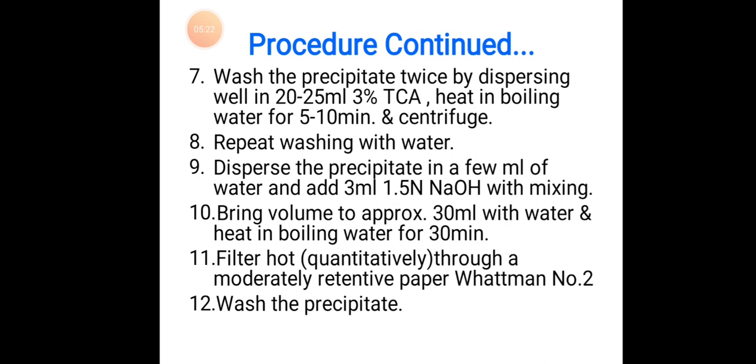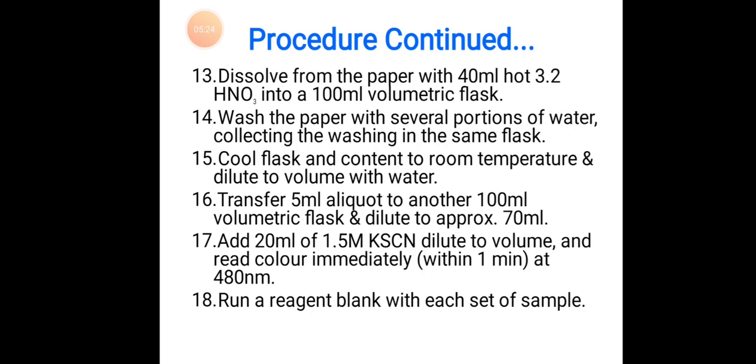Dissolve the paper with 40 ml hot 3.2 normal HNO3 into a 100 ml volumetric flask. Wash the paper with several portions of water, collecting the washing in the same flask. Cool flask and content to room temperature and dilute to volume with water. Transfer 5 ml aliquot to another 100 ml volumetric flask and dilute to approximately 70 ml.